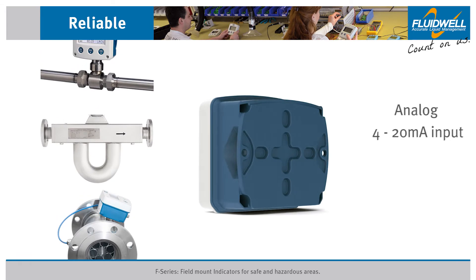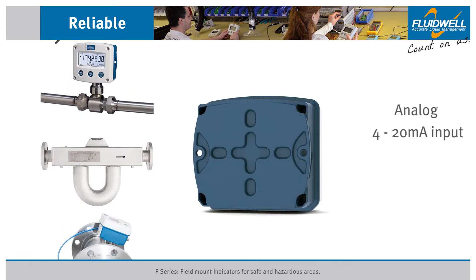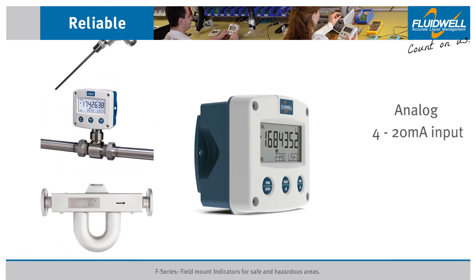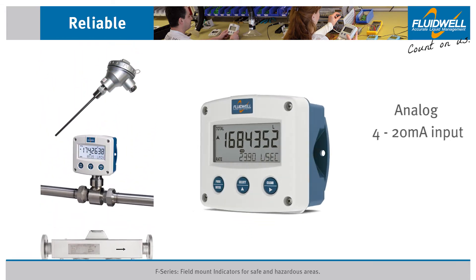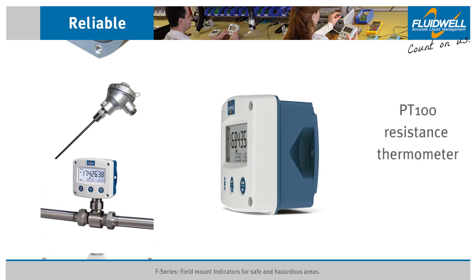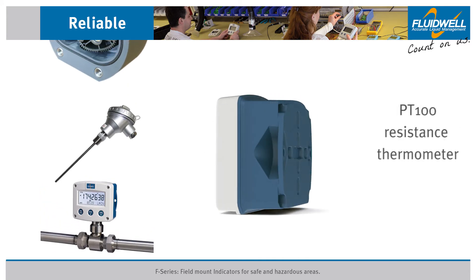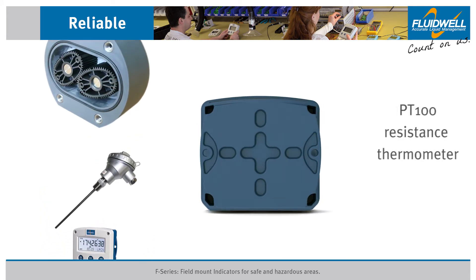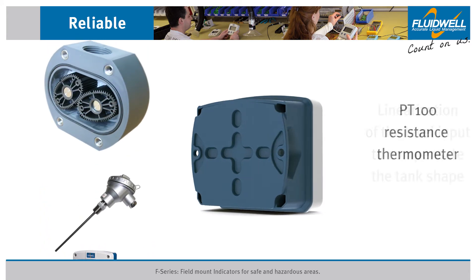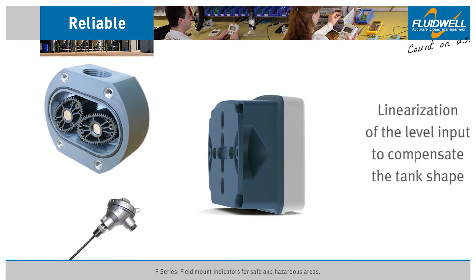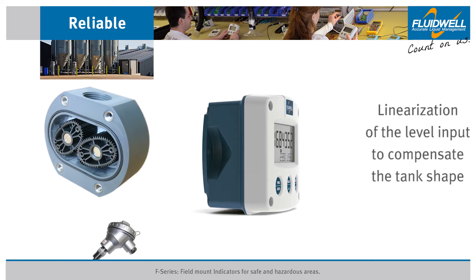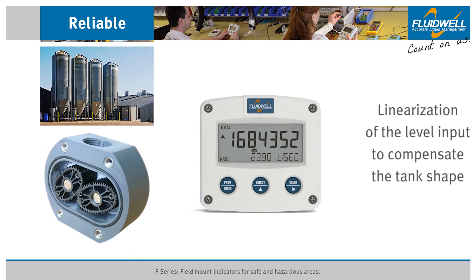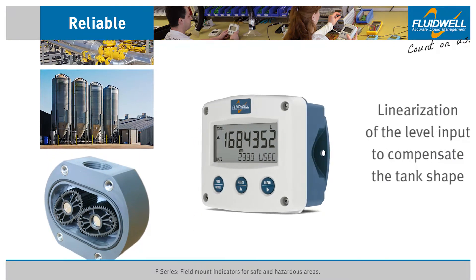Analog 4 to 20 milliamps inputs are available for level, pressure and temperature measurements. A PT-100 resistance thermometer input is also supported. Linearization of the input signal is available for level applications to compensate the tank shape.